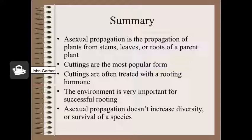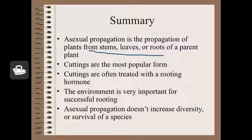In summary, asexual reproduction is a way of propagating plants from old plants. Cuttings are the most popular form and are treated with a rooting hormone quite often to help the roots grow. The environment is really important: high humidity, low light, and a light soil that's not too wet.